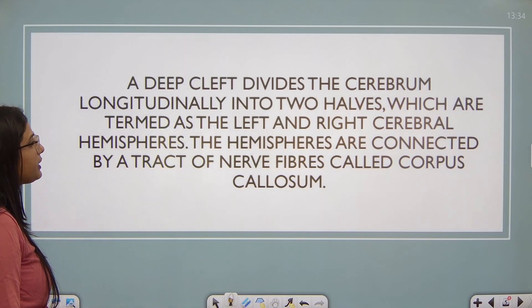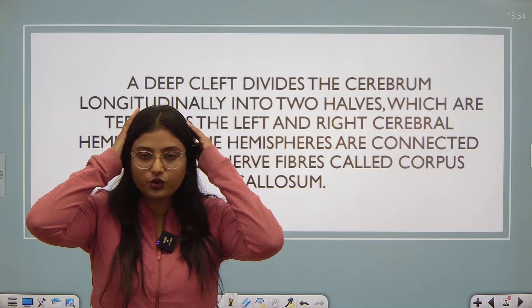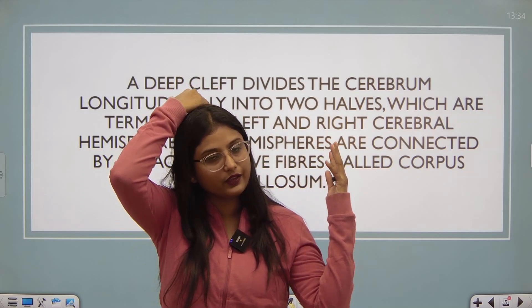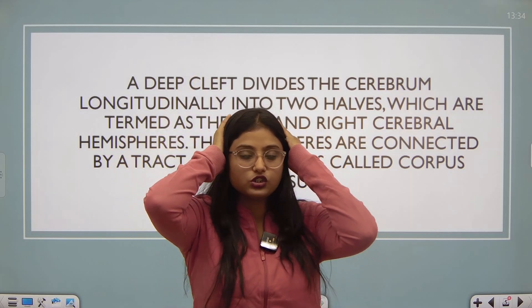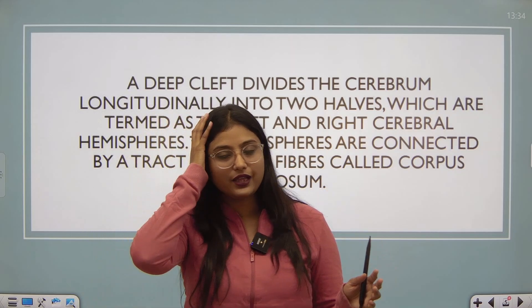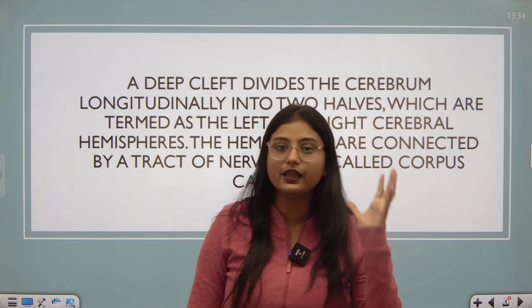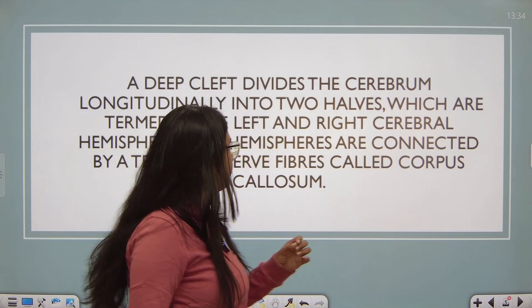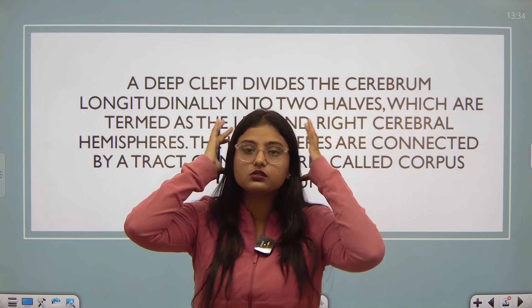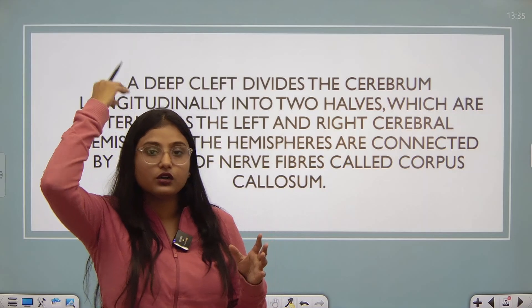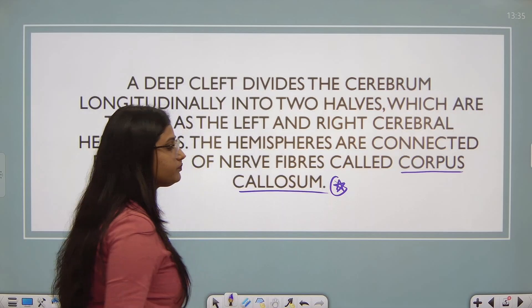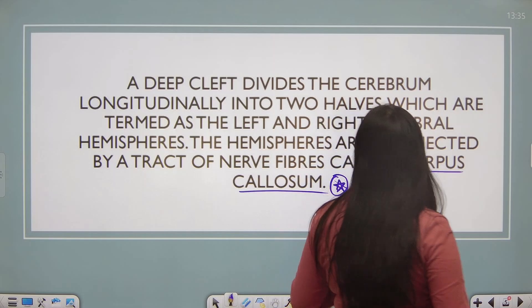A deep cleft divides the cerebrum longitudinally into two halves, which are termed as left and right cerebral hemispheres. The hemispheres are connected by a tract of nerve fibers called the corpus callosum. In the longitudinal fissure, there is a tract of nerve fibers — this structure is called the corpus callosum.